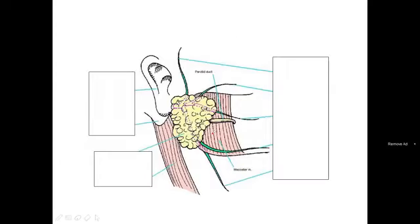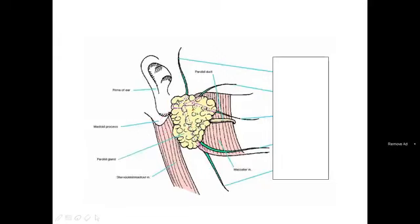Looking at the anatomical diagram, you can identify the pin of ear (earlobe), the mastoid process, and the parotid gland located below the ear. The parotid duct (Stensen's duct) can also be identified. The sternocleidomastoid muscle is visible, which was discussed earlier in the neck lumps topic. The parotid duct is five centimeters long, with variation present in some patients.